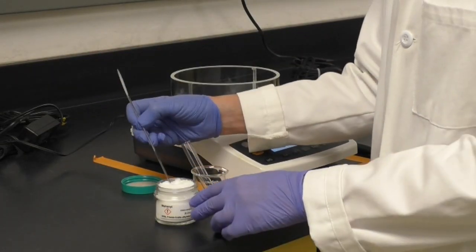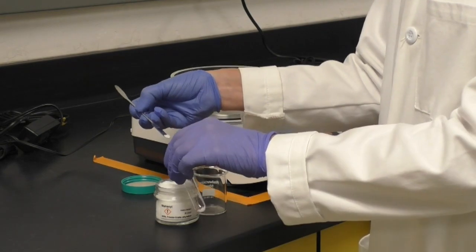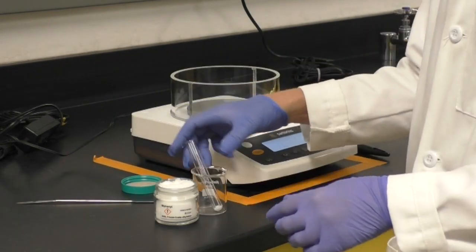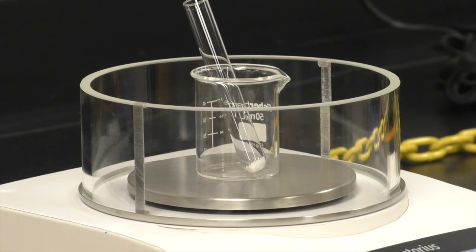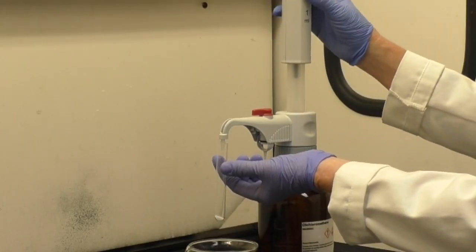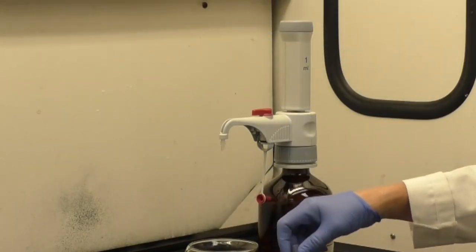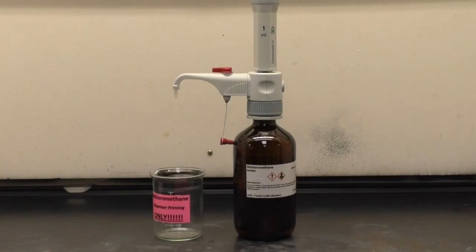Next, add 0.16 grams of biphenyl to the test tube. Then add 1 milliliter of dichloromethane using the 1 milliliter pump.